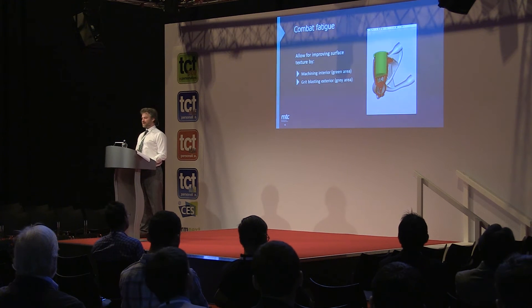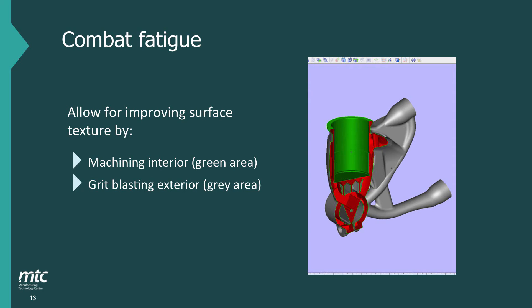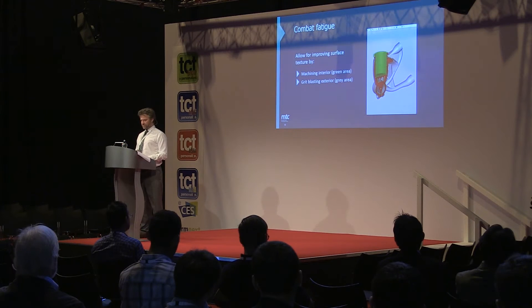Another consideration for powder bed-based processes is surface texture. Parts pulled from the powder bed look like sand castings — very rough — which is concerning for engineers in terms of fatigue. For this component, the interior will be machined anyway to accept the fork tube (shown in green), and the grey exterior area can be improved by grit blasting, so that box is ticked in the design process.